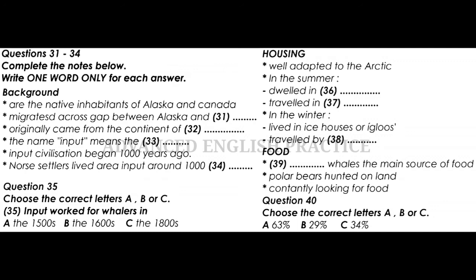The combined percentage of the Inuit population in Alaska and Canada stands at 63%, with Canada being 29% and Alaska around 34%. Some Alaskan Inuit live in towns and cities, but the majority live in small settlements and hunt and fish for most of their food.